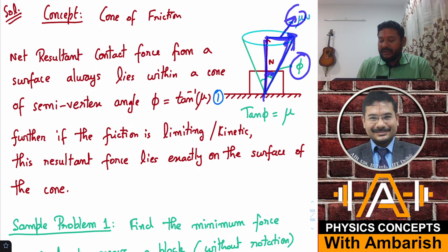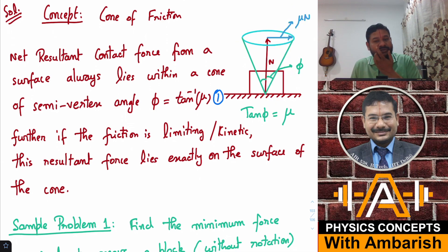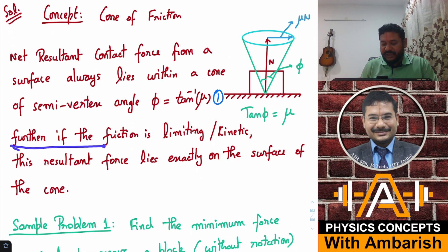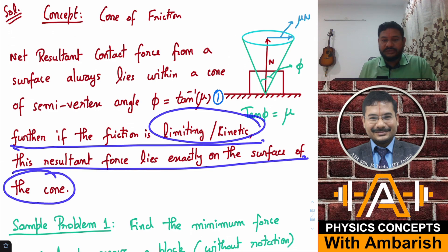And depending on how you apply the force on this block, the resultant contact force will always lie within this cone. So if it is at the verge of slipping, then it will be on the surface of this cone. And if it is not at the verge of slipping, then this force will be less than μN and then the force will be somewhere lying within the cone. So we call this as cone of friction and we know that the net resultant force, that is the resultant of normal reaction and the friction force, must lie within this cone or on the surface of this cone if the object is either on verge of slipping or it is already slipping. Net resultant contact force from a surface always lies within the cone of semi-vertex angle φ, which is equal to tan⁻¹ μ. Further, if the friction is limiting or kinetic, the resultant force lies entirely on the surface of cone.